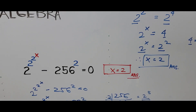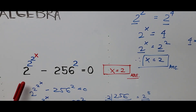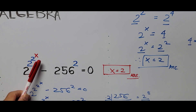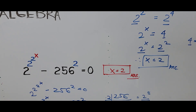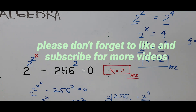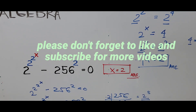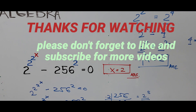We have found our answer: x equals 2, for this nested exponent equation where x is on top of the tower. That's all for now. For those new to my channel or who have not subscribed yet, please don't forget to like and subscribe for more videos — I would appreciate it. Thank you for watching!